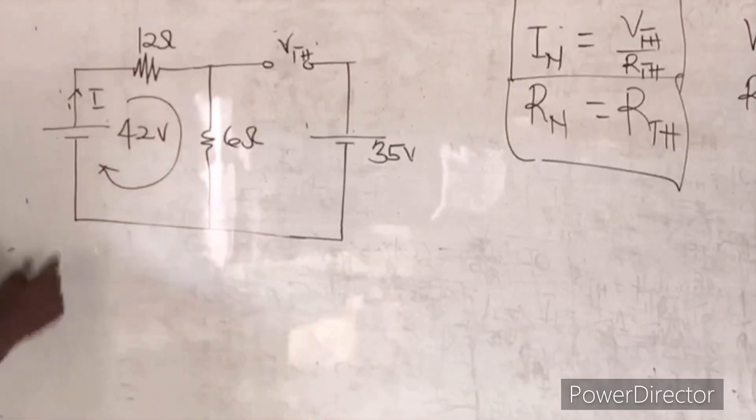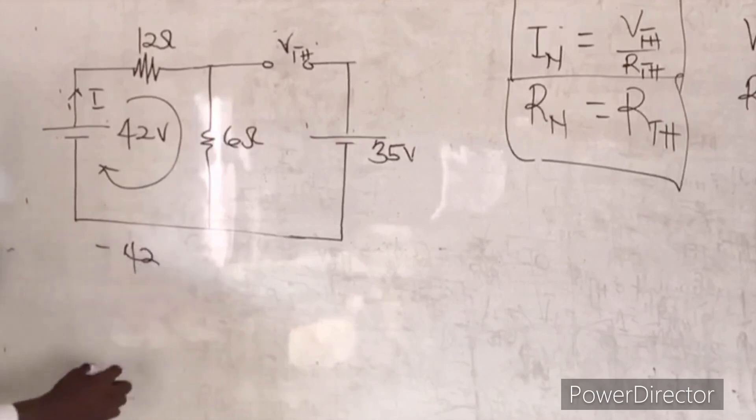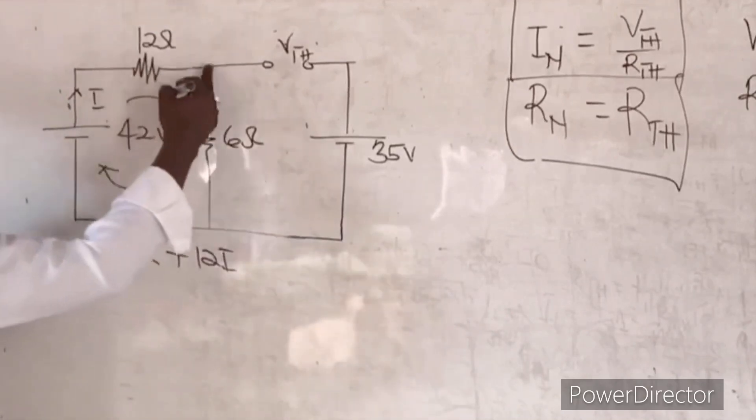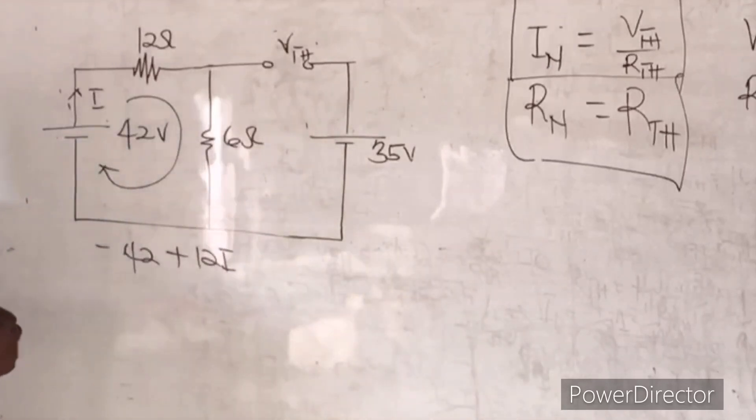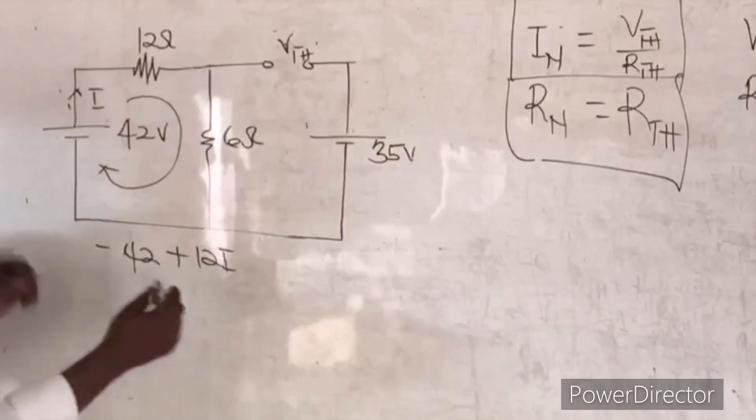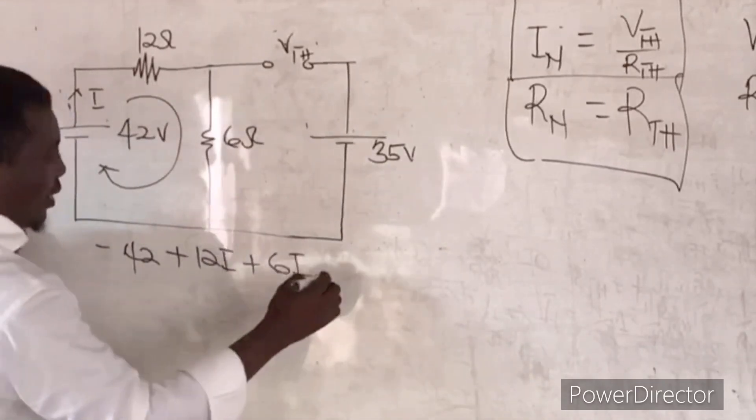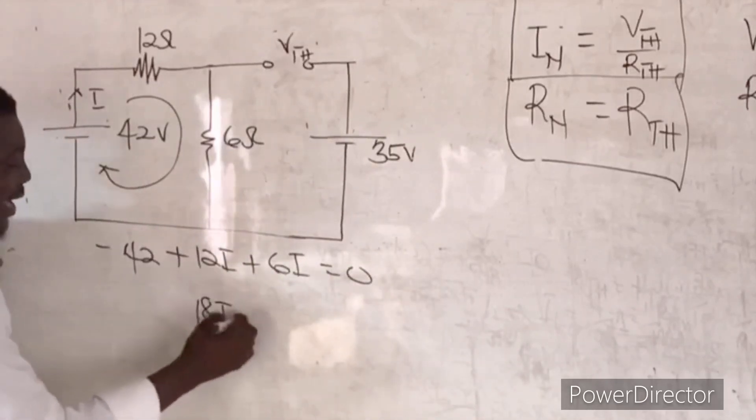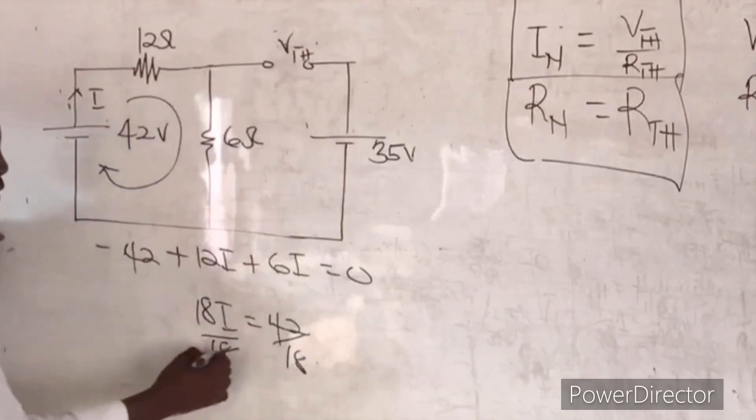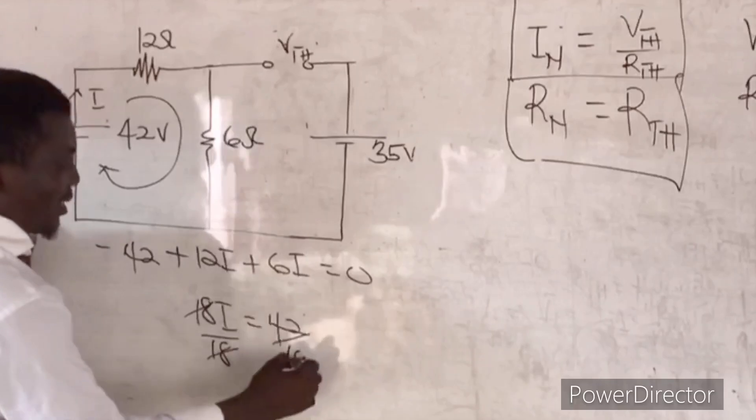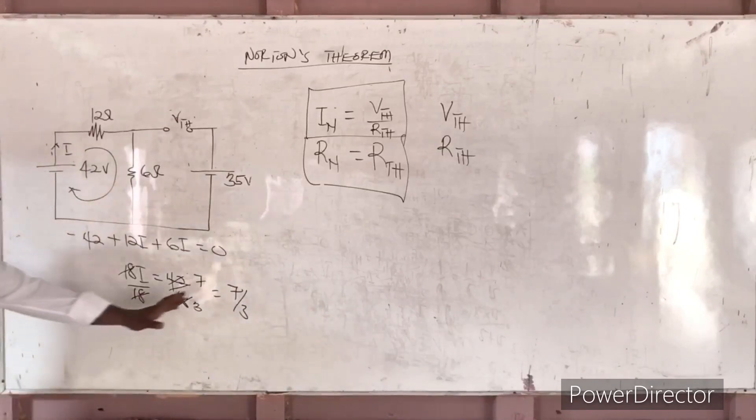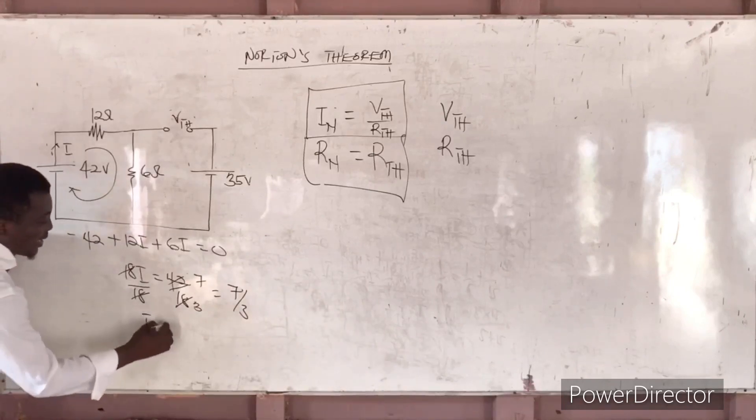So you are going to get, let's take our loop. It touches negative phase, we are getting minus 42. Then it is in the same direction as this, you get plus 12I. When it gets here, it can't go to this side simply because of this opening circuit. And this opening circuit, no current will flow through this one but current will be flowing through only this. So we have plus 6I. It is equal to 0, so you end up getting 18I is equal to 42. So you divide by 18, 6 goes here 3, 6 goes here 7, so you are getting 7 over 3.